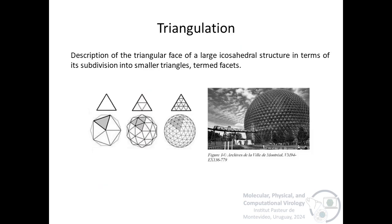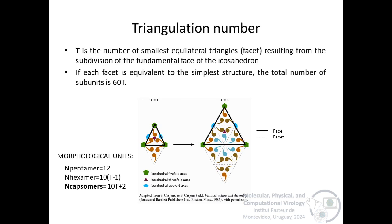The other important concept is triangulation, which describes the triangular faces of an icosahedron structure in terms of its subdivision into smaller triangles called facets and it determines the size of the capsid. Triangulation is a concept inspired by geodesic domes where increasing the frequency of subdivision of faces of an icosahedron increases the sphericity. The higher the T number, the more subunits make up the capsid. And what is the triangulation number? The T is the number of small equilateral triangles or facets resulting from the subdivision of the fundamental face of the icosahedron. And if each facet is equivalent to the simplest structure, the total number of units is 60T.